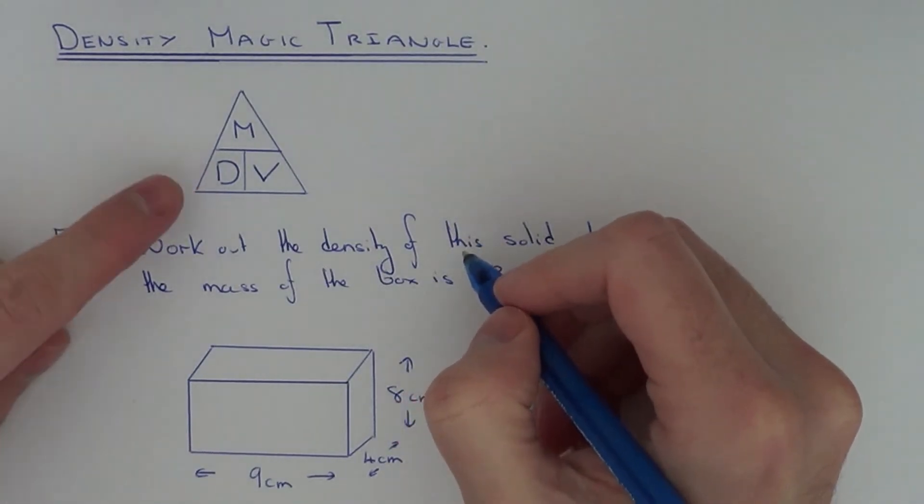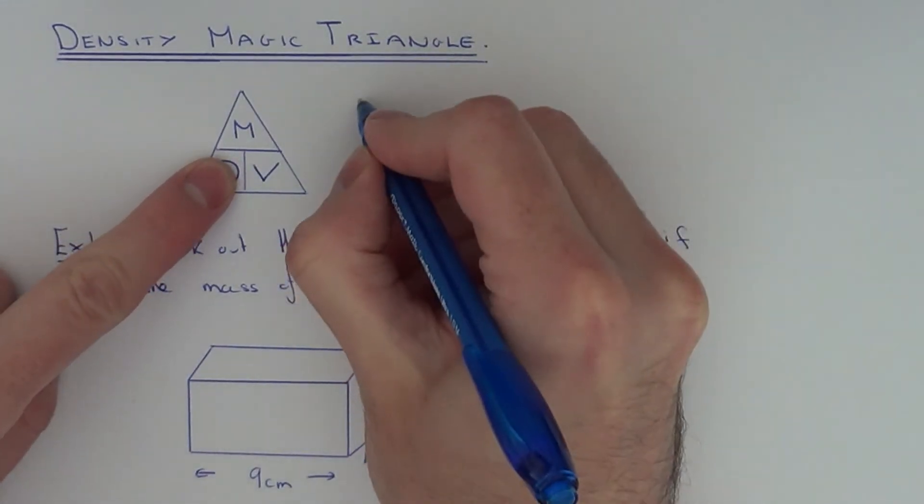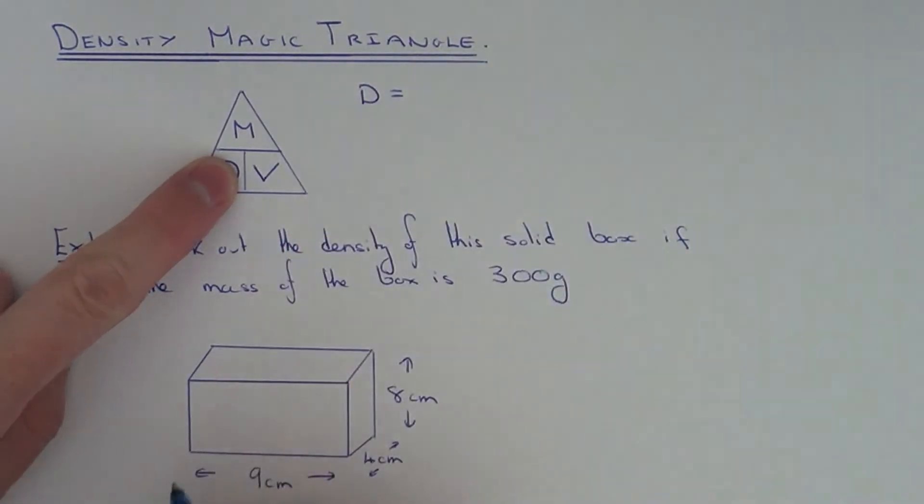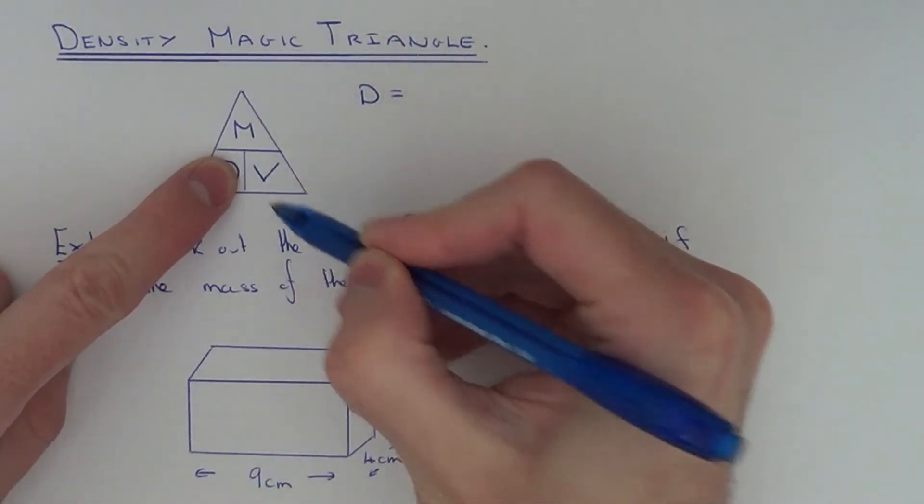So if you wanted to calculate the density of a shape, you'd cover up the density and it would be mass divided by volume.